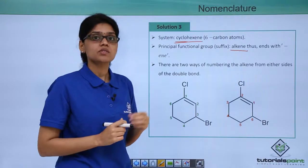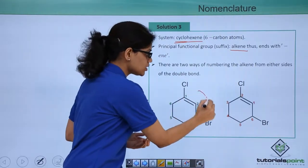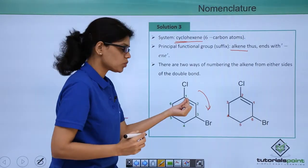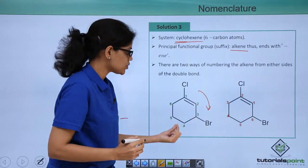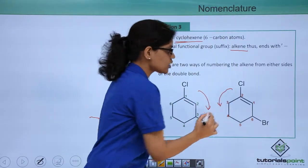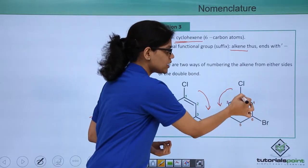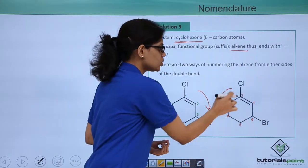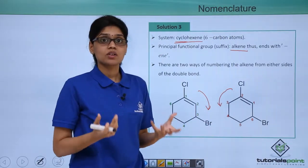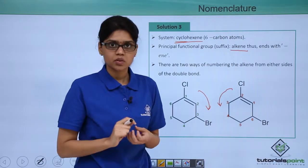Now we can see that there are 2 ways of numbering this particular system. That is by starting here going in a clockwise direction such that chlorine is at position 1, 2, 3, 4, 5, 6. Both these ways could be correct because essentially numbering is starting with the principal functional group.